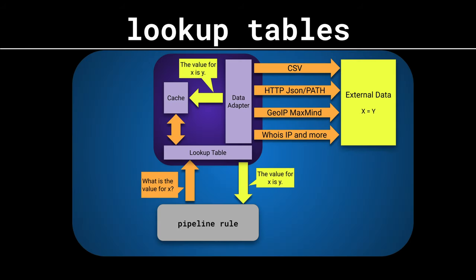For the next two examples we're going to be using lookup tables. Lookup tables allow us to look up information - we give the lookup table a key and receive a value in return. If this is the first time we're requesting a key, the lookup table asks the data adapter directly for the value. Once we have the value, we store the key value pair in cache and return the result. The next request for the same key is handled by the in-memory cache until it times out. Generally I'll build a lookup table, cache, and data adapter for each source of information.